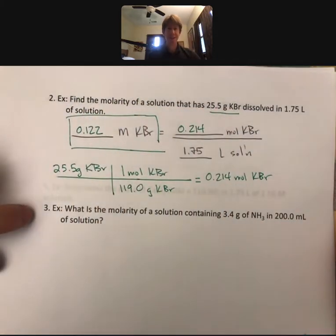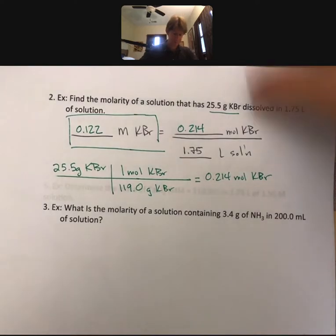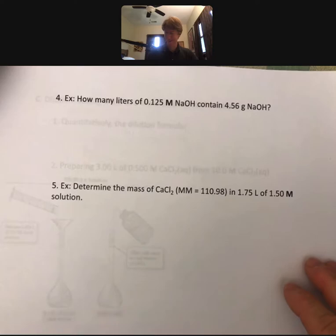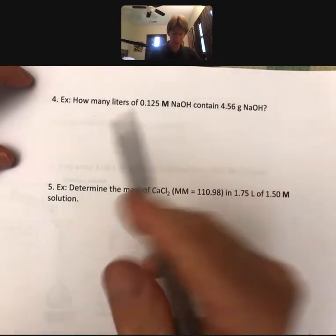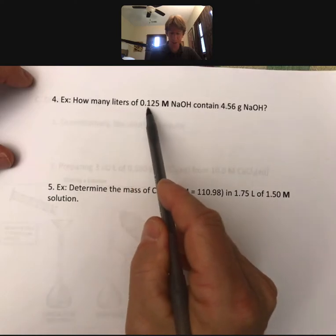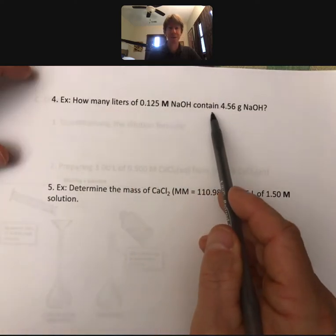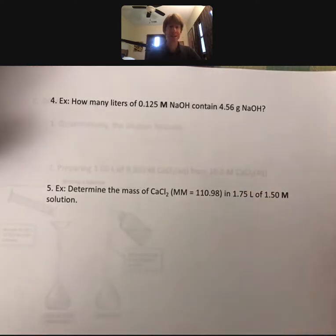So this example down here is very similar. Please do that, I'll be looking for the answer in your notes. We do have more questions to do about this. So this one's going to be a little different. It's going to say: how many liters of 0.125 molar sodium hydroxide contain 4.56 grams of sodium hydroxide. It's the same setup, but we've been given different information.